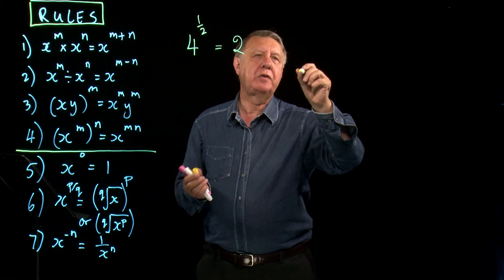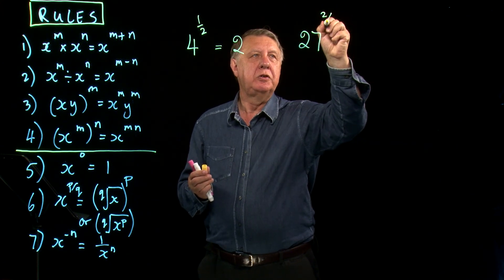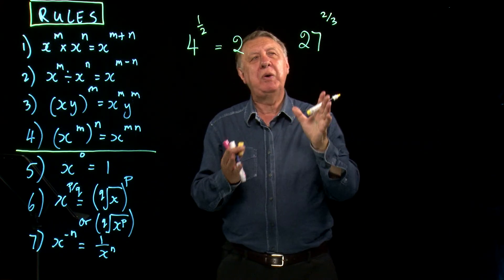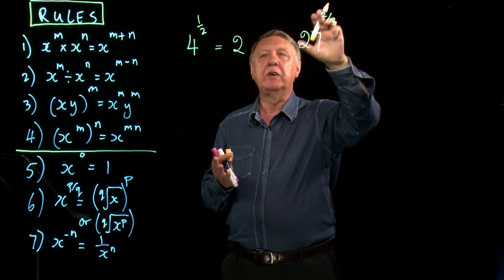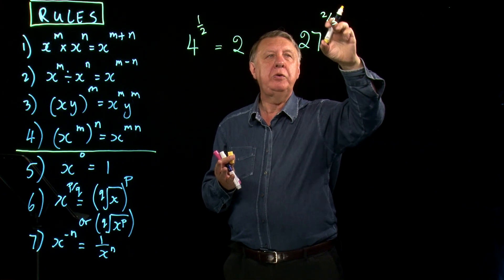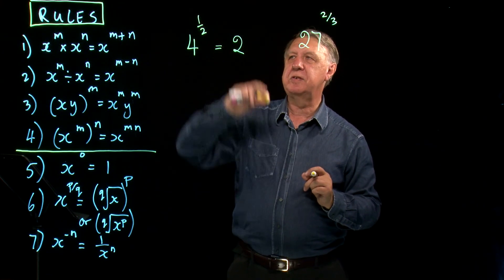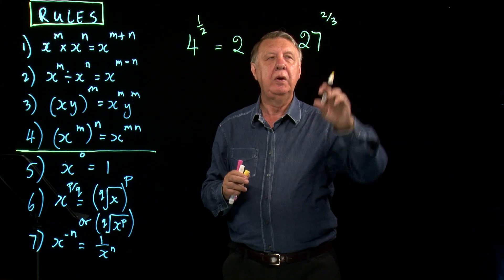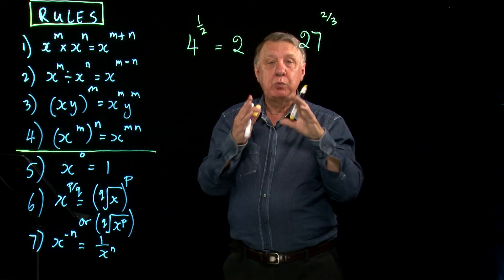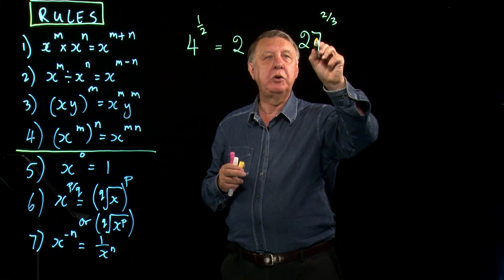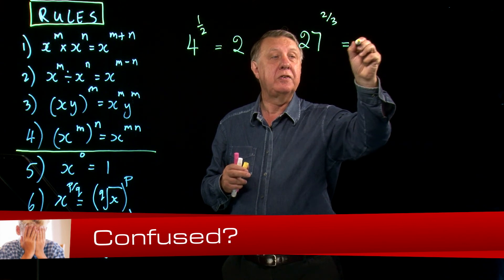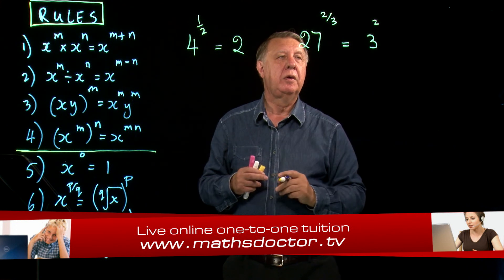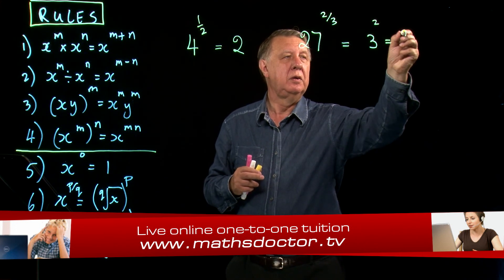So if you're then asked what is 27 to the 2/3? Again your mind said well it's something to do with roots, it's a fraction again. But there are two numbers in it this time. The number on the bottom, the root bit, is a 3. What is the cube root of 27? It is 3. Then you worry about the top number. 3 squared is 9.